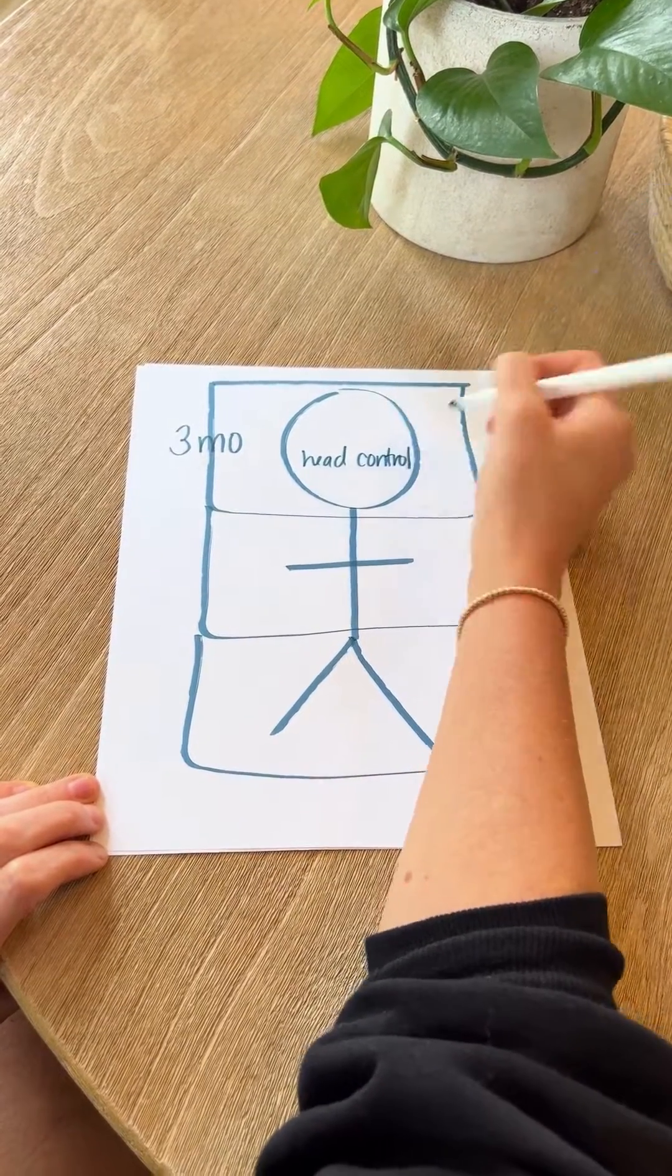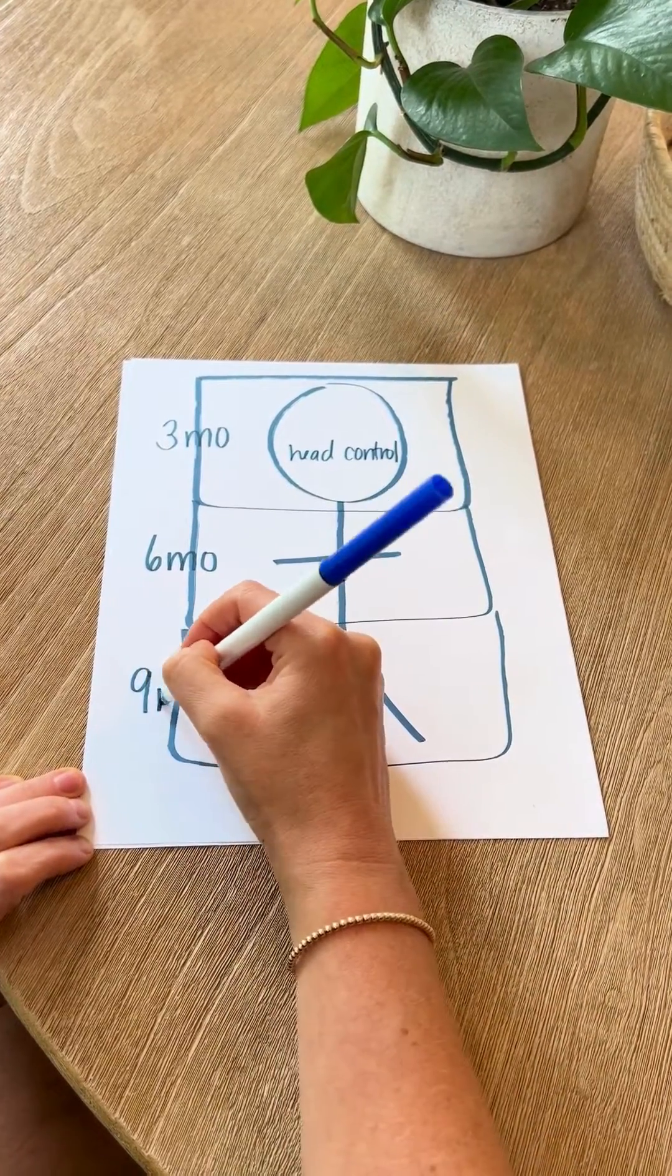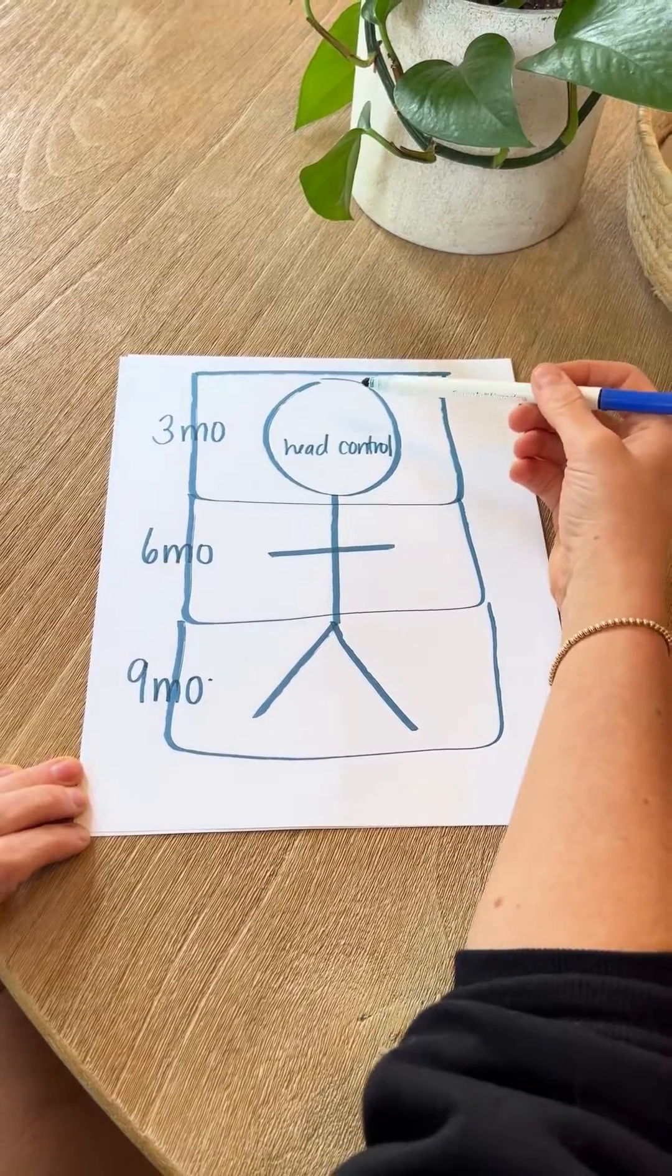Then you're going to go to the next box. This will be your six months and the last box nine months. So now you can really break this down to remember everything.